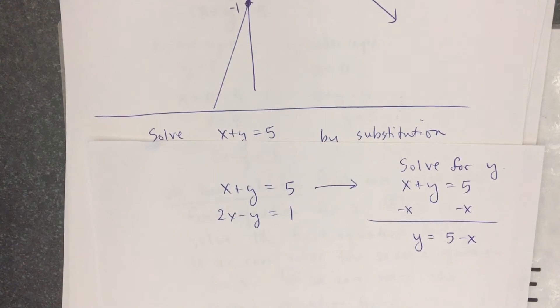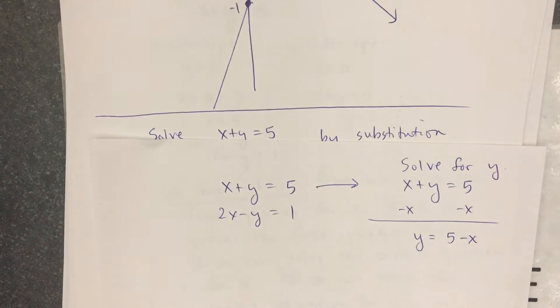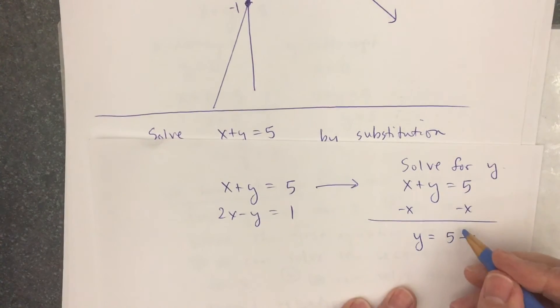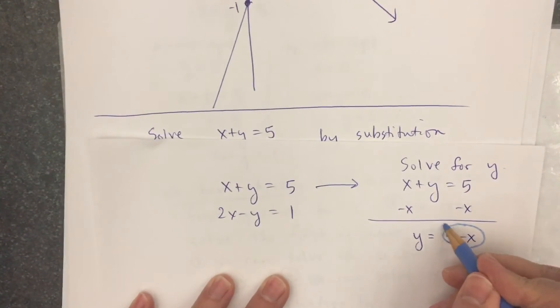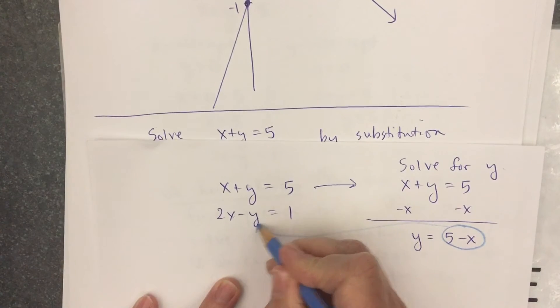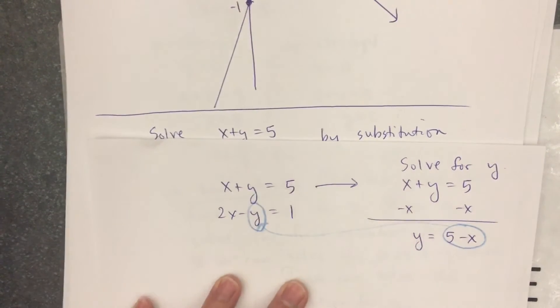5 minus x, they're not like terms. I cannot combine them. Here's my substitution. I'm going to take y equals 5 minus x, 5 minus x, and substitute it into the second equation where y is.